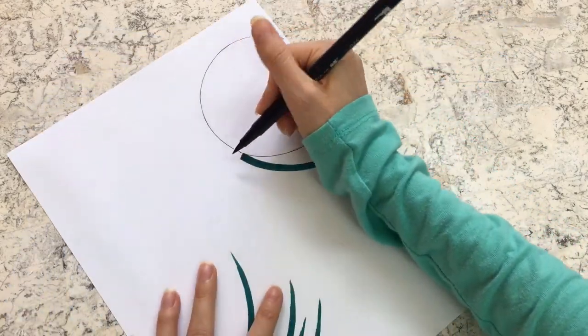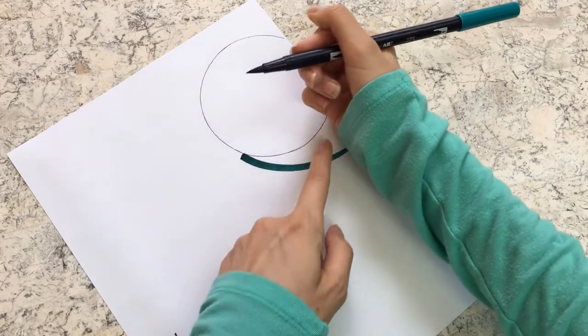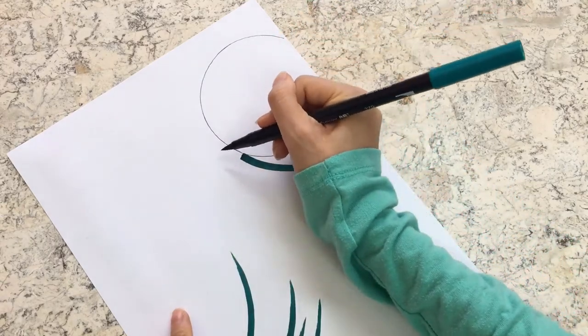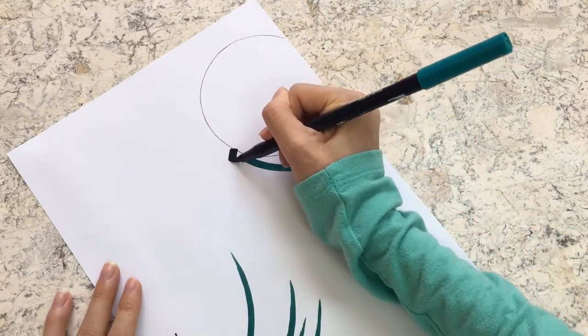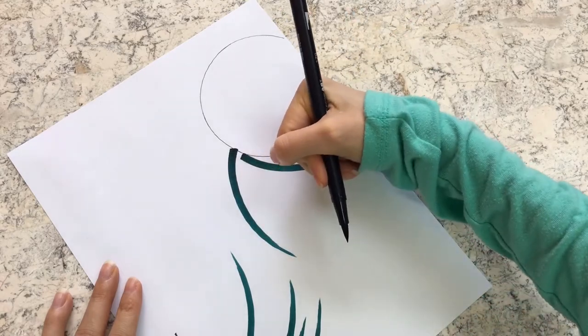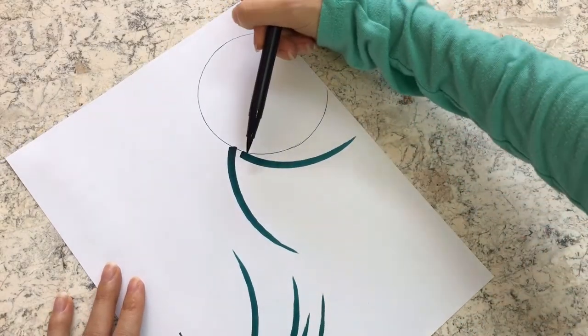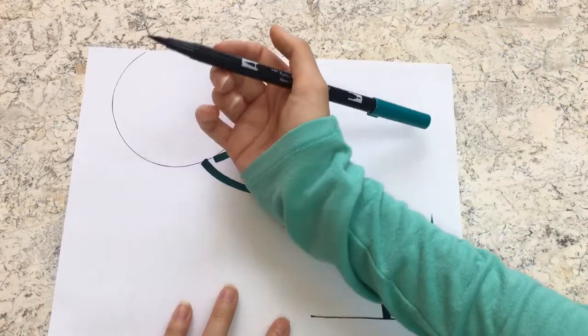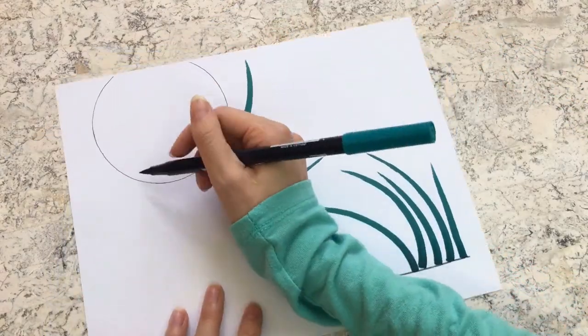But if I rest my hand at a point that is closer to the outside of the circle, the pinwheel spokes will come out of the circle closer to a 90 degree angle like this. Here you can see that just by changing where my hand was placed, I dramatically changed the angle of the pinwheel spokes.